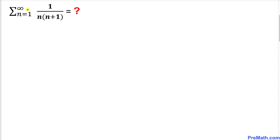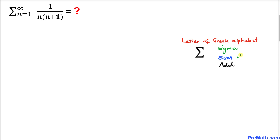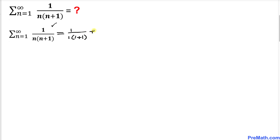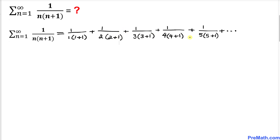Let's go ahead and get started with the solution. First, let's focus on the sigma symbol — in mathematics it means sum or addition. Let's focus on this series. We are going to replace n values from 1 through infinity, so this becomes 1 divided by 1 times (1+1), plus 1 divided by 2 times (2+1), and this series goes on and on. Now let's simplify these denominators.